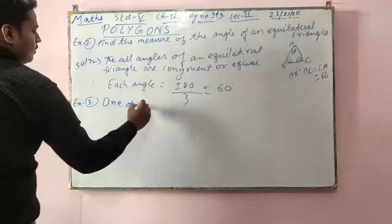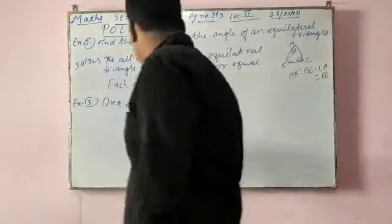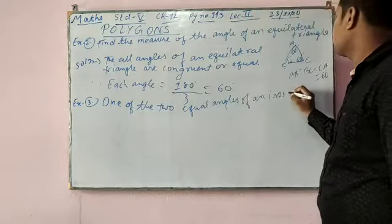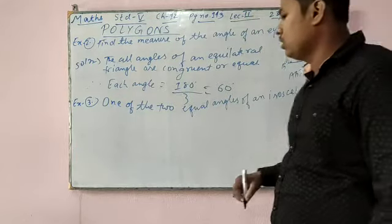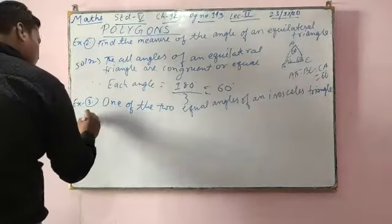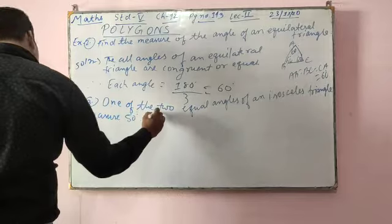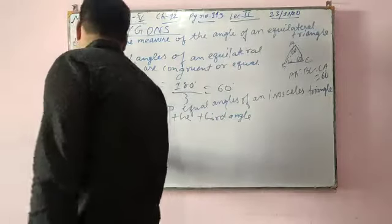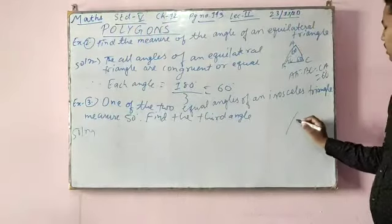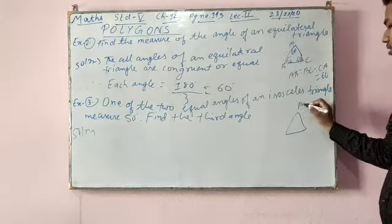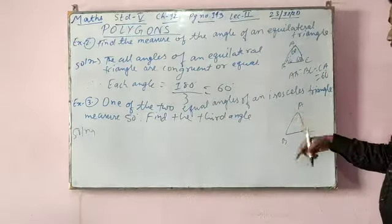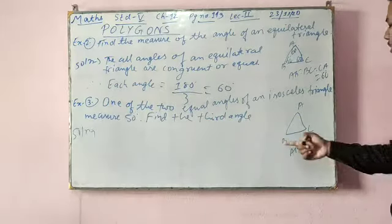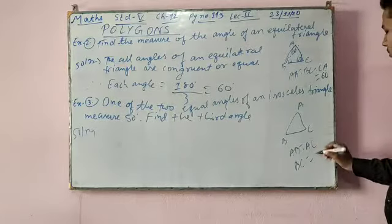One of the two equal angles of an isosceles triangle measures 50 degrees. Find the third angle. In an isosceles triangle, only two sides are equal. If AB is equal to AC, then BC will not be equal. Only two sides are equal — it can be BC equal to AB, but only two sides.